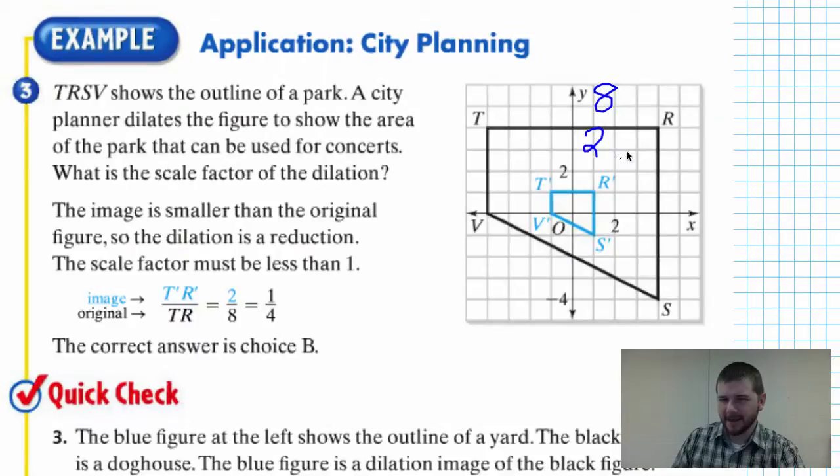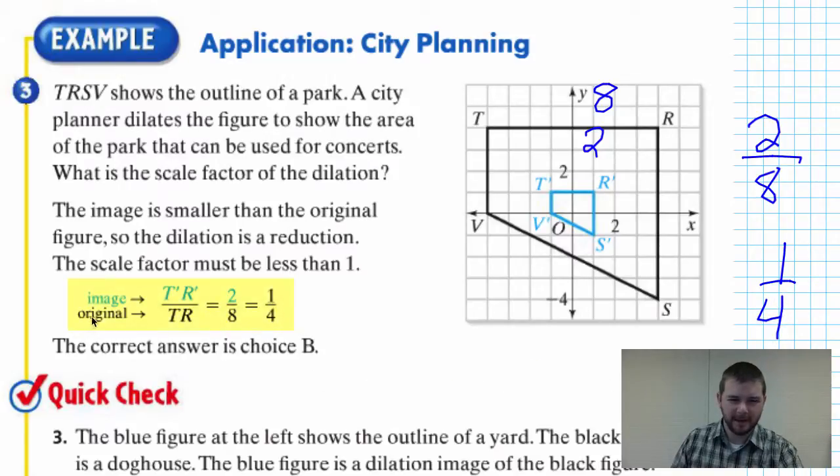And that's the same thing as two divided by eight. So our smaller length divided by our larger length, which reduces to one fourth. And we can see that here on the left: image over original. So the image length over the original length reduces to our scale factor. So the correct answer choice is B. I didn't even see answer choices, but okay.